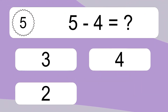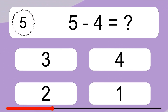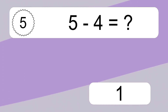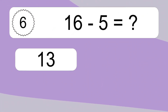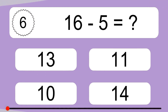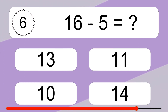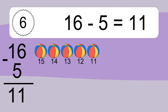16 minus 5 equals what? Let's count it. 4, 3, 2, 1. 16 minus 5 equals 11. Let's count it. 15, 14, 13, 12, 11.